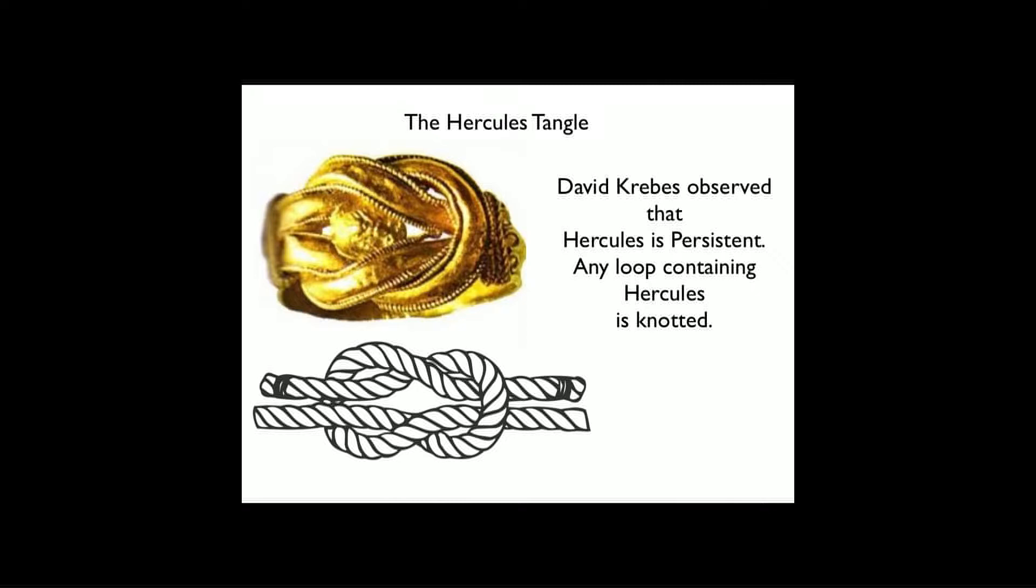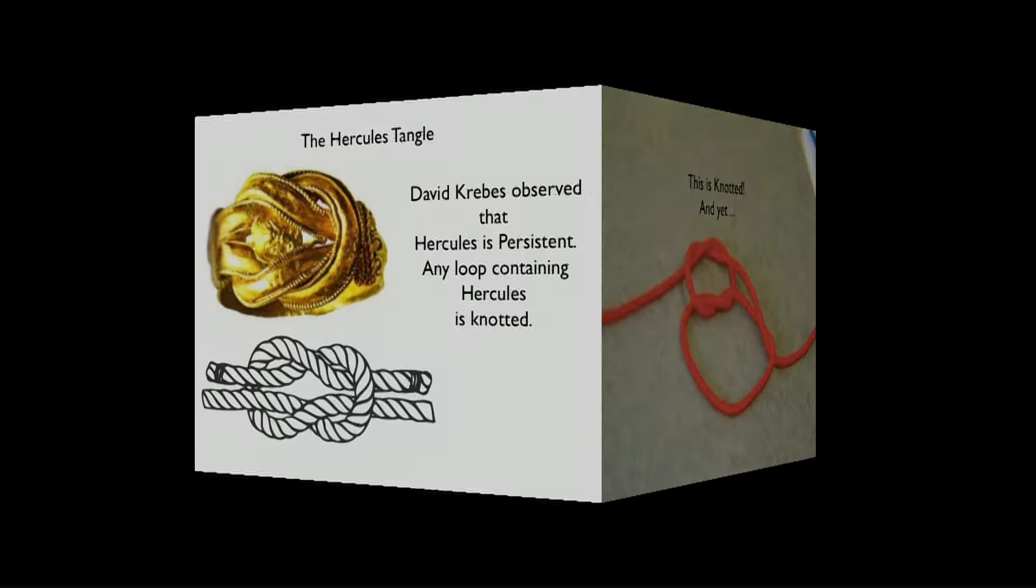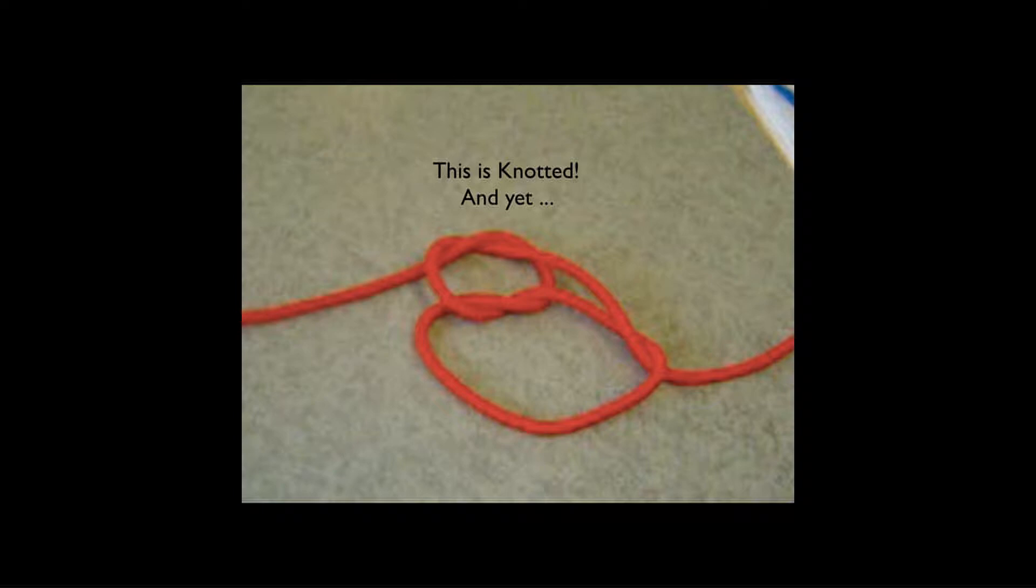Now I want to look at another very well-known tangle called the Hercules tangle. This has a great long history in jewelry and art. There's a wonderful theorem due to David Krebs about the Hercules tangle: Hercules is persistent. Any loop, any closed loop containing Hercules, is knotted, doesn't matter what loop it is. In particular, this loop that you see here is knotted.